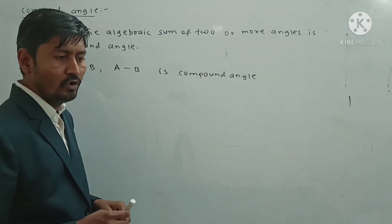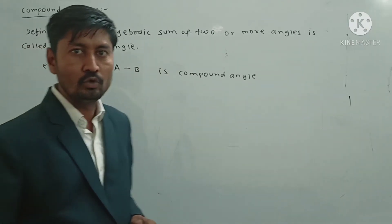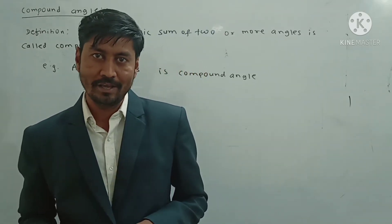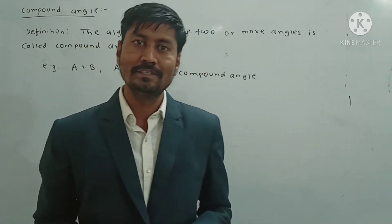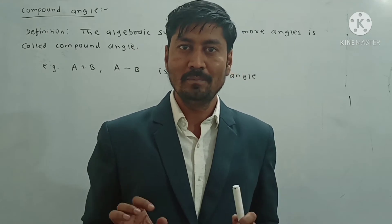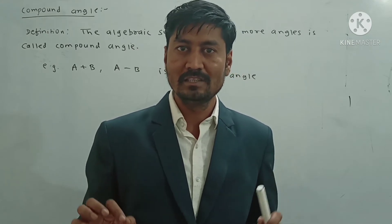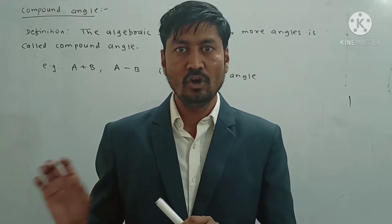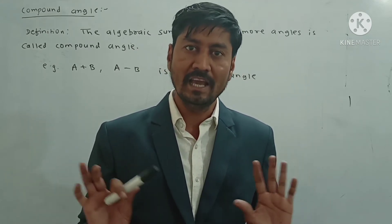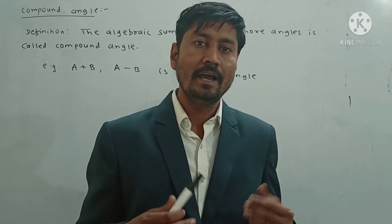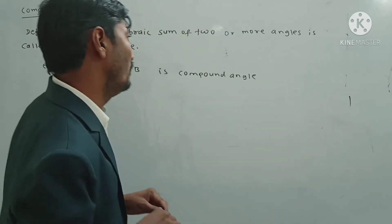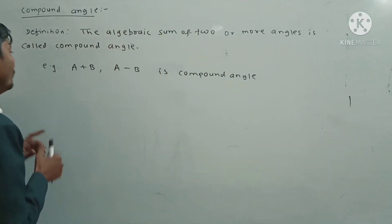Now we are going to discuss the formulas for compound angles. We have six formulas for compound angles: sin(A+B), sin(A-B), cos(A+B), cos(A-B), tan(A+B), and tan(A-B). We will also see the uses of these compound angle formulas.